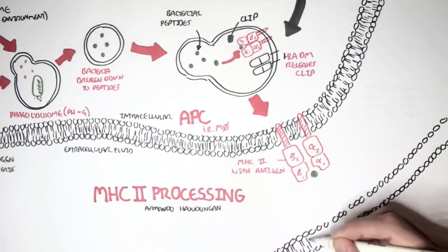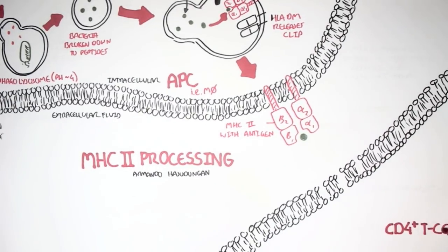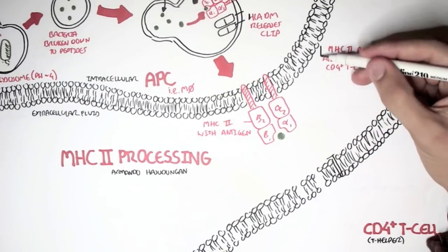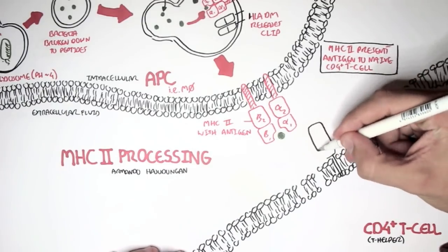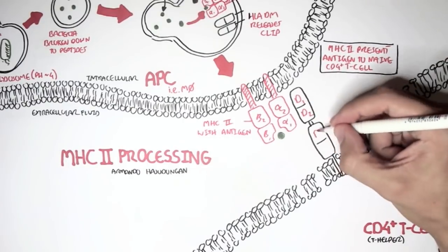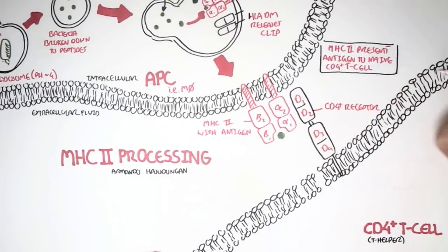So here I'm drawing up the cell membrane of a naive CD4 T cell, which essentially is a naive T helper cell. What first happens is that a receptor called CD4 receptor, hence it's a CD4 T cell, will check the MHC molecule. It will check if the MHC being expressed is an MHC class II, because CD4 receptor only interacts or recognizes MHC class II.